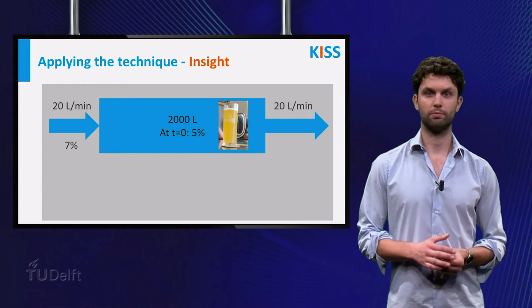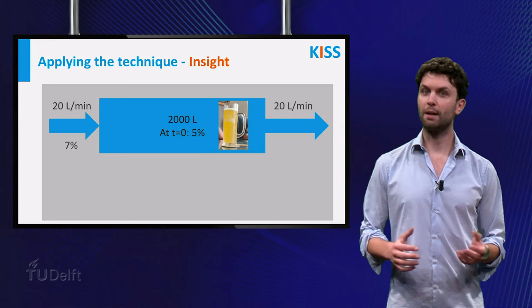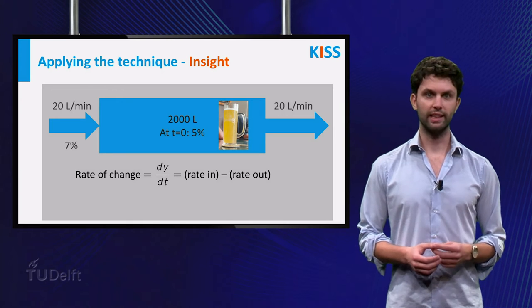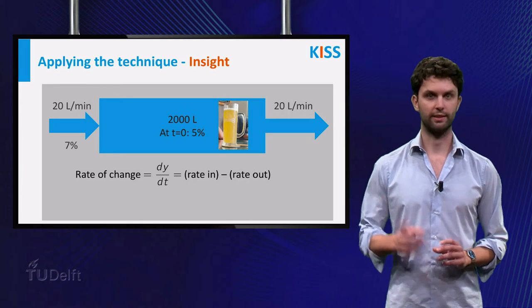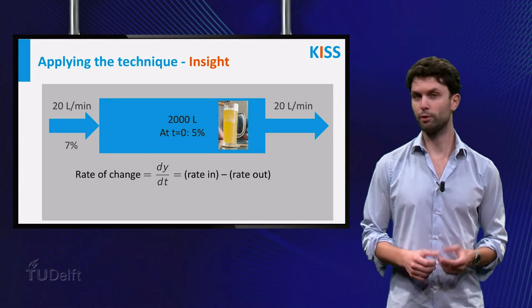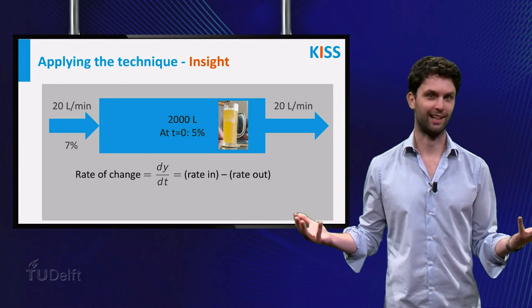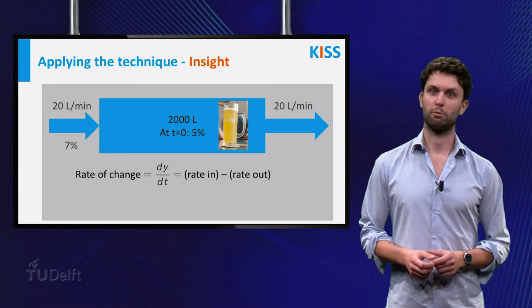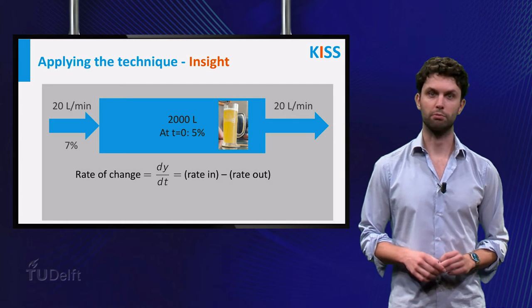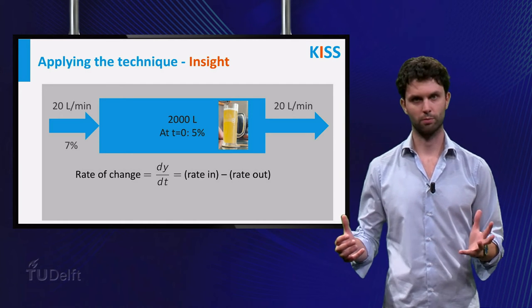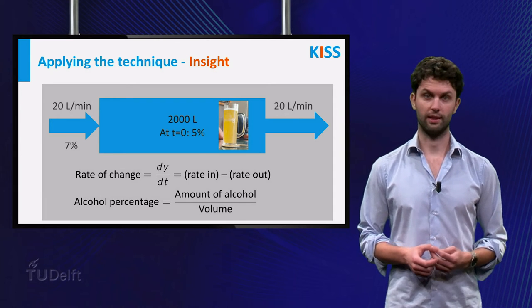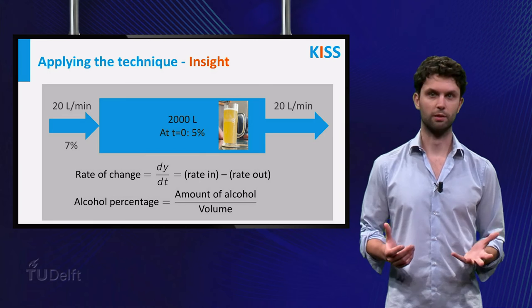Alright, step two, insight. It's time to come up with a plan. The first important idea is that the rate of change can be written as the rate in minus the rate out. This reduces the problem to finding the rate in and rate out. Furthermore, the variable Y denotes the amount of alcohol, while the question provides alcohol percentages. You can relate this via the formula alcohol percentage is amount of alcohol divided by volume.